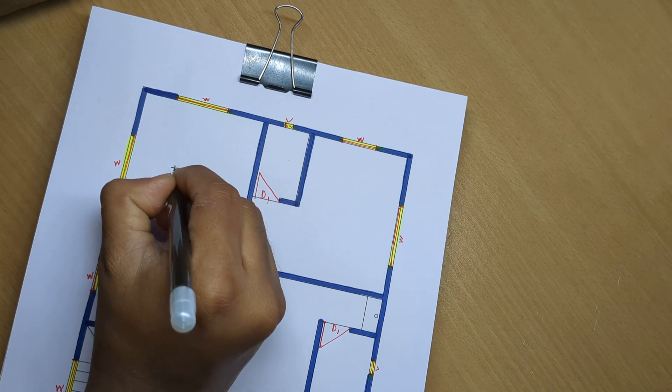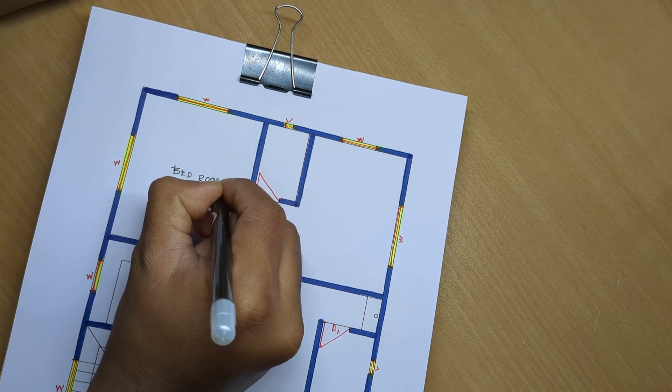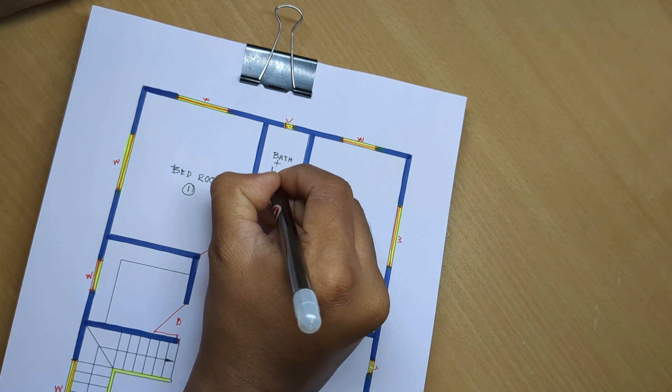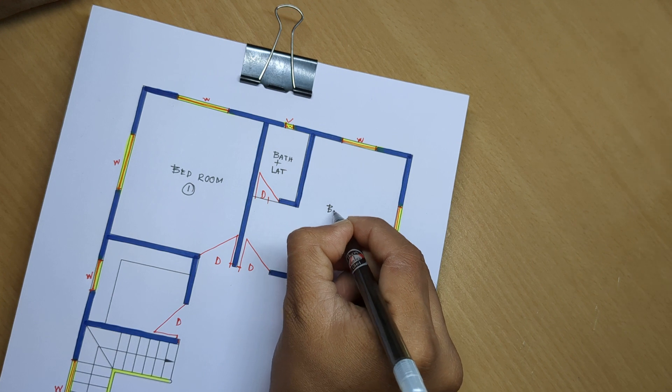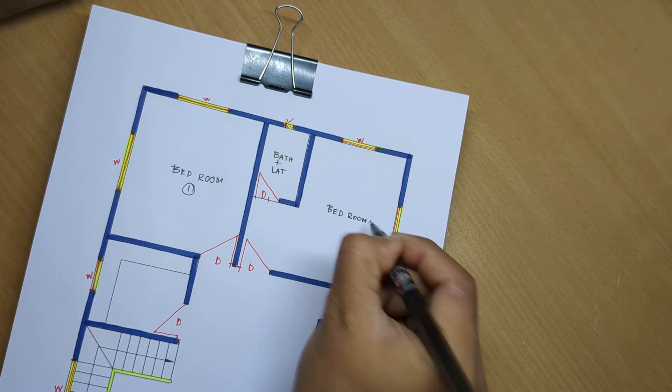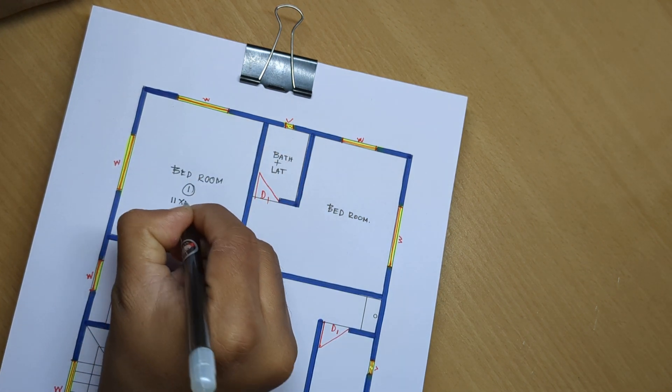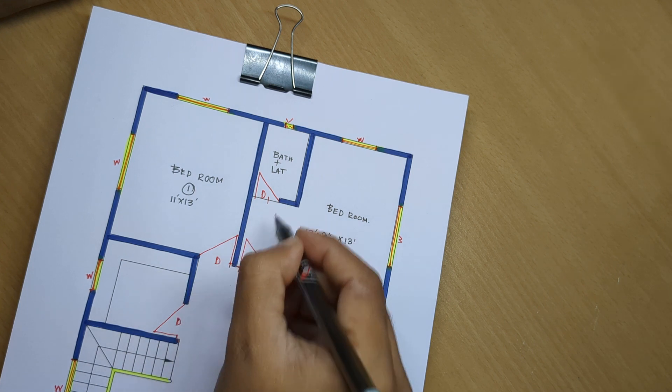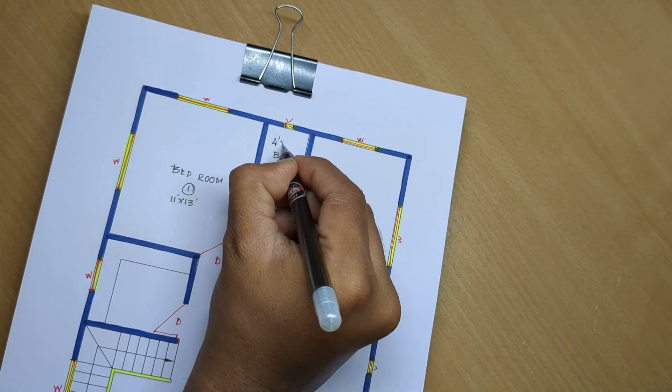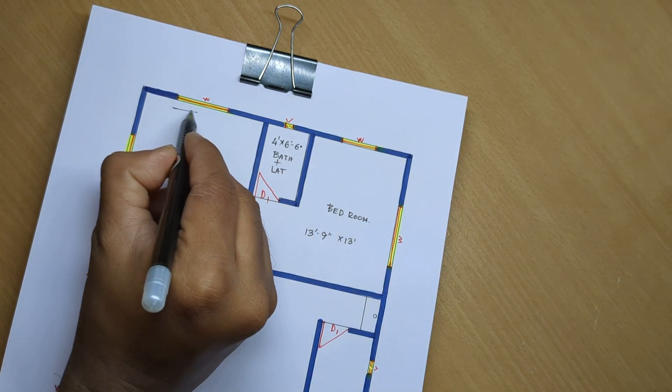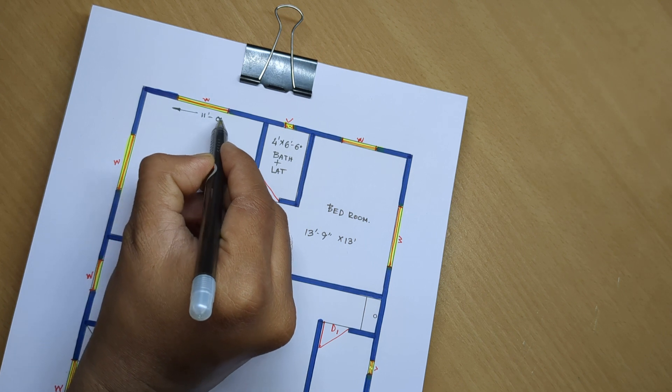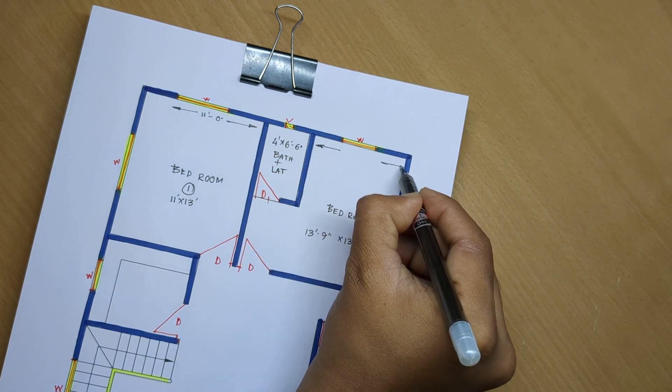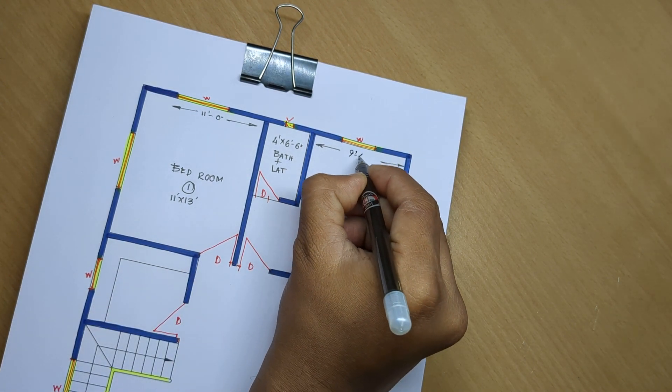Bedroom 1, bath plus latrin. Bedroom 11 by 13 feet, 9 inch by 13 feet, 4 feet by 6 feet 6 inch. 11 feet, 9 feet 4 inch.